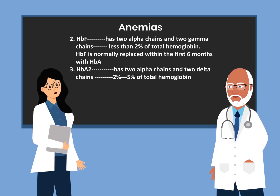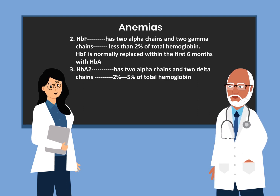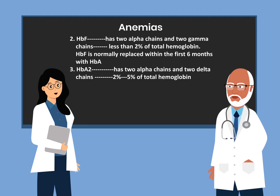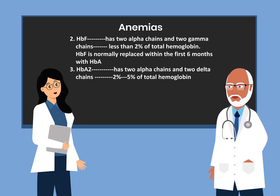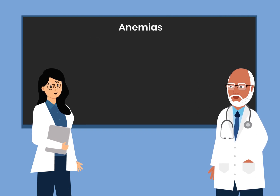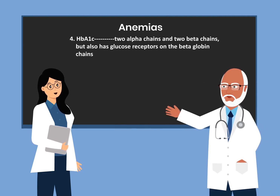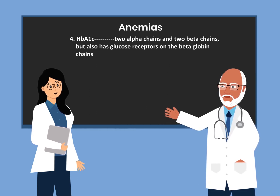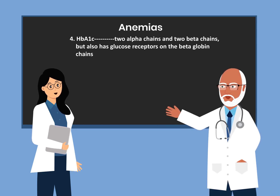Number three, hemoglobin A2. This has two alpha chains and two delta chains and accounts for 2% to 5% of total hemoglobin. And lastly, hemoglobin A1C. This has two alpha chains and two beta chains but also has glucose receptors on the beta globin chains.